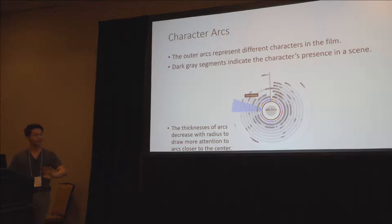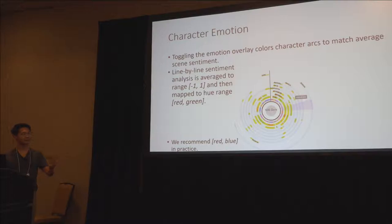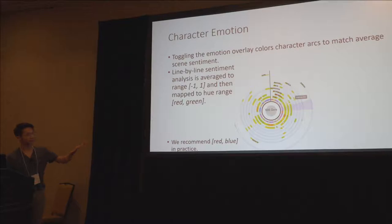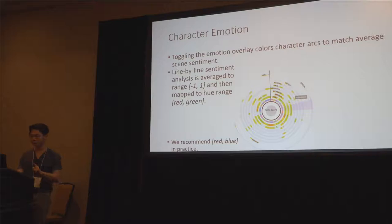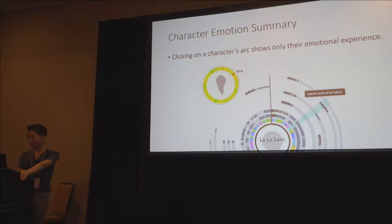This previous information tells the what — is the character present in a given scene and how much do they speak. We also want to show the how, which is why we have an emotion overlay that colors these segments for the scenes that characters are present in. We do a sentence-by-sentence sentiment analysis in a given scene, average all of these values to get a range between negative one and one, and map this to a range between red and green. In practice, we recommend using red and blue as the hue range for colorblind viewers. If you click one of the character arcs, it gives you a focused view of the emotional experience.